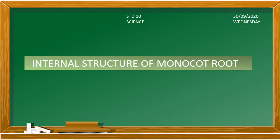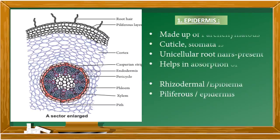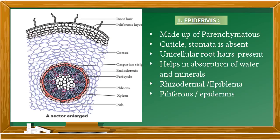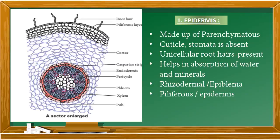In this video we are going to learn about the internal structure of monocot root. Looking at this enlarged section diagram of a monocot root, a monocot root structure has three different types of tissue: the first one is epidermis, second one ground tissue, third one vascular tissue.